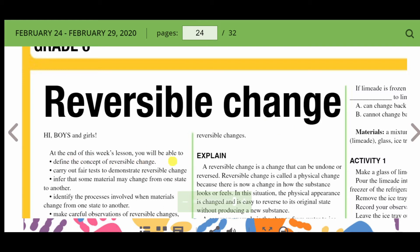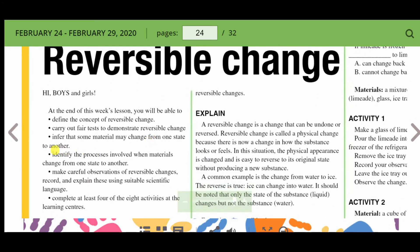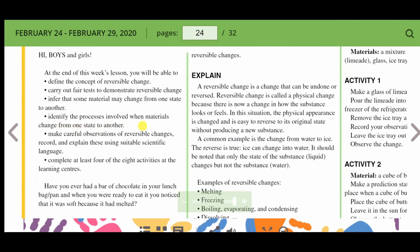At the end of this lesson, you'll be able to define the concept of reversible change, carry out fair tests to demonstrate reversible change, infer that some materials may change from one state to another, identify the process involved when materials change from one state to another, make careful observations of reversible changes, record and explain these using suitable scientific language, and complete at least four of the eight activities at the learning centers.